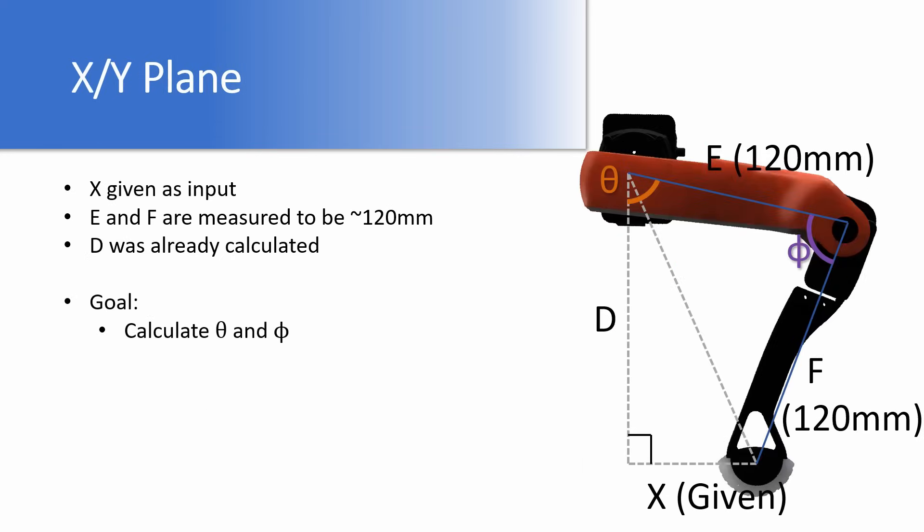Now moving to the XY plane. We know X is given as an input, and E and F are measured to be about 120 millimeters. D was already calculated in a previous step. Our goal here is to calculate theta and phi.